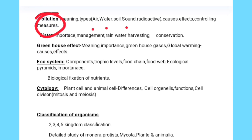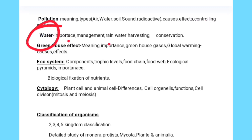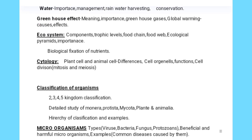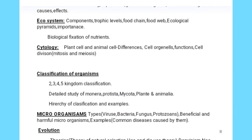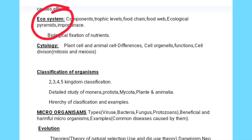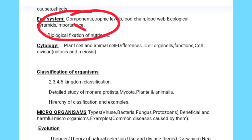Soil erosion is an important topic — meaning, causes, effects, and soil conservation methods. Pollution: meaning, types, causes, effects, and controlling measures — you must focus on the controlling measures. Water importance and water management, including rainwater harvesting, are also covered. The greenhouse effect, greenhouse gases, global warming causes and effects, and ecosystem components, trophic levels, food chains, food webs, and ecological pyramids — the entire concept is already available on the channel's biology playlist.